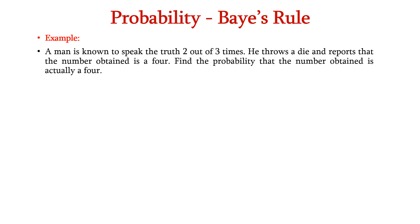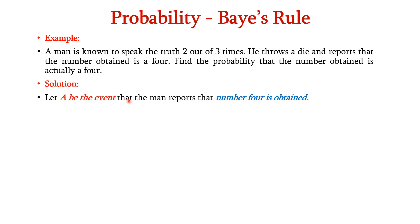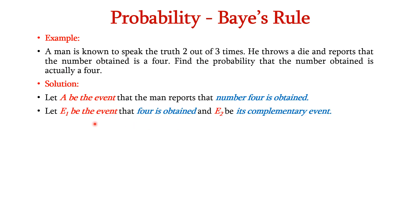Now let us see an example for Bayes' rule. A man is known to speak the truth 2 out of 3 times. He throws a die and reports that the number obtained is a 4. Find the probability that the number obtained is actually a 4. Let A be the event that the man reports the number 4 is obtained. Let E1 be the event that 4 is obtained, and E2 be its complementary event.